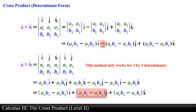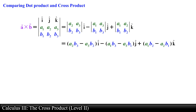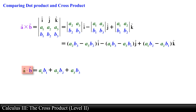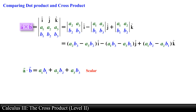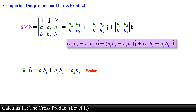Notice that the j hat component of the cross product is written with the negative sign distributed. Lastly, let's compare the component definition of the dot product with the component definition of the cross product, as many students get both of these vector operations confused. The dot product is found by multiplying corresponding components and adding them together, which results in a scalar quantity, while the cross product is found by carrying out operations with different components, which results in a vector.